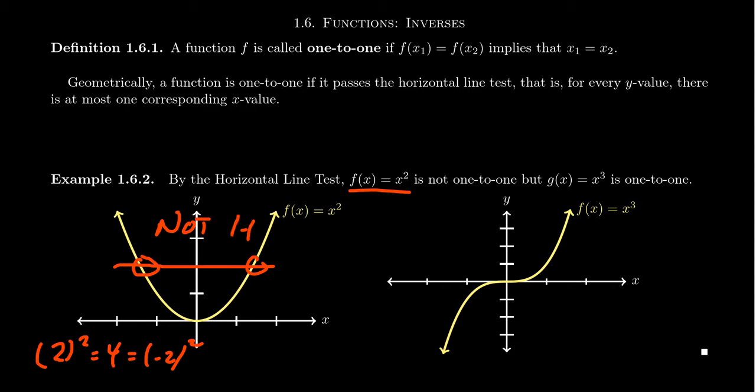On the other hand, if you take the function g of x equals x-cubed, no matter which horizontal line you draw, it'll never intersect the graph in more than one location. And therefore, this graph passes the horizontal line test and is a one-to-one function.